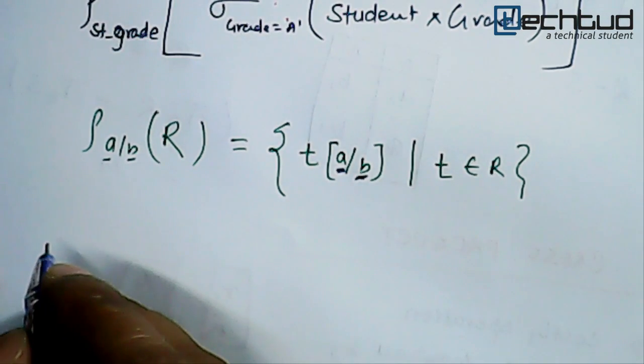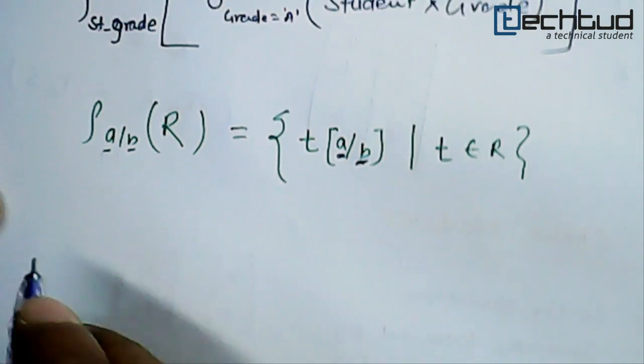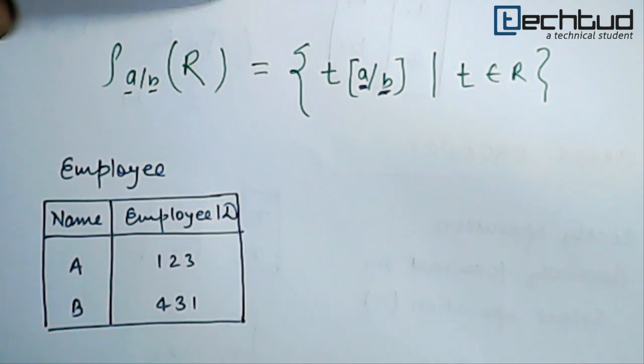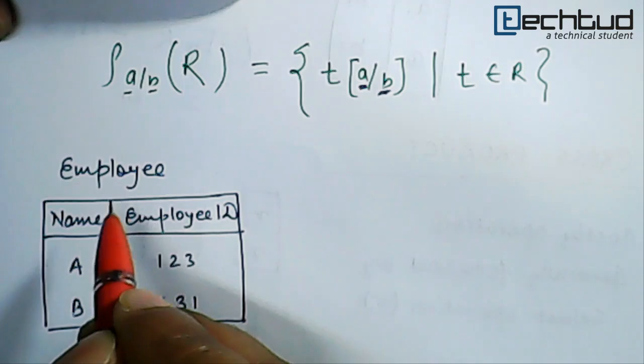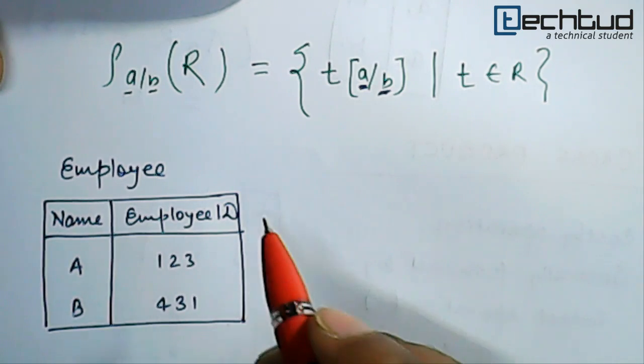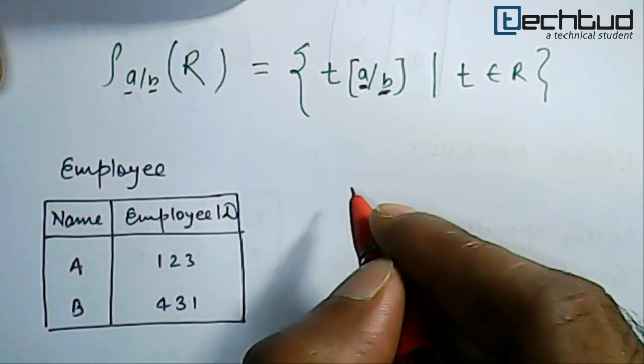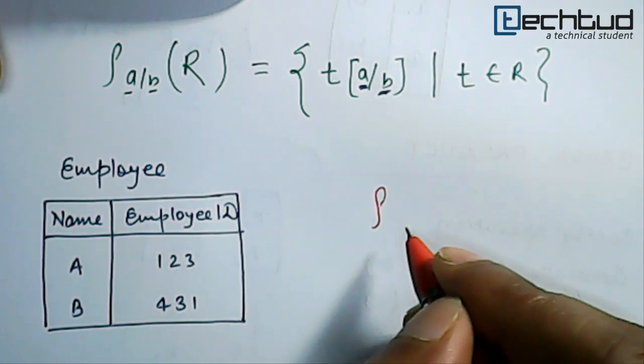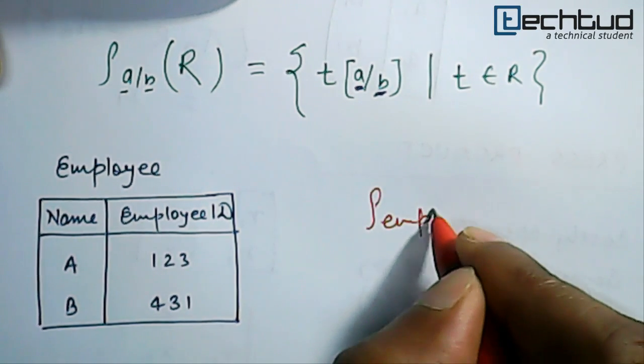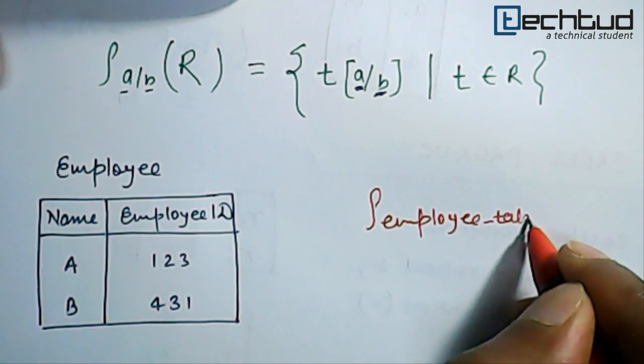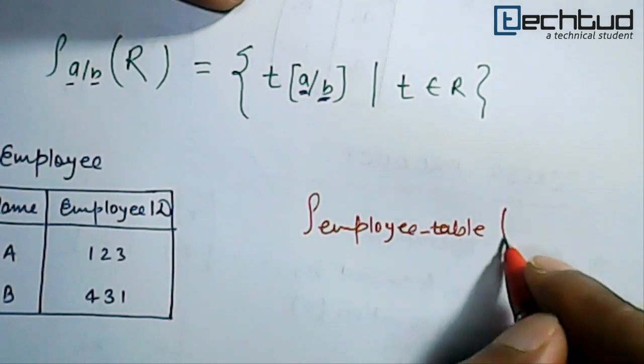Let's say we have one example as follows. For this relation Employee, I want to rename this as EmployeeTable. So what we will do is write ρ, and the new name - that is EmployeeTable - and then Employee.